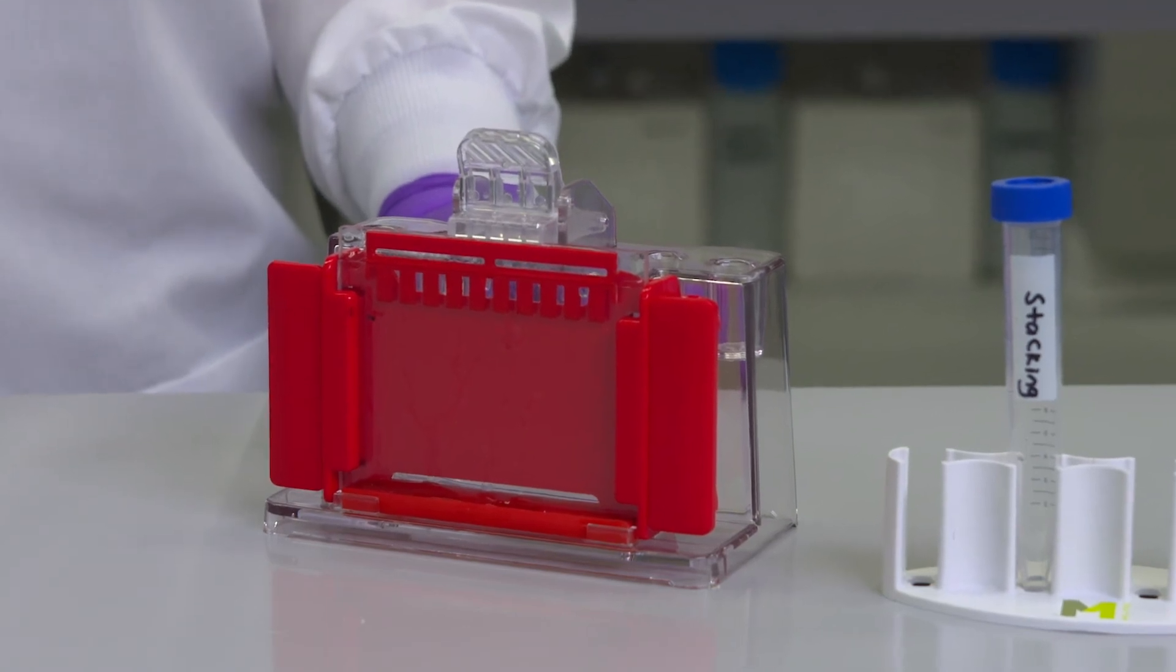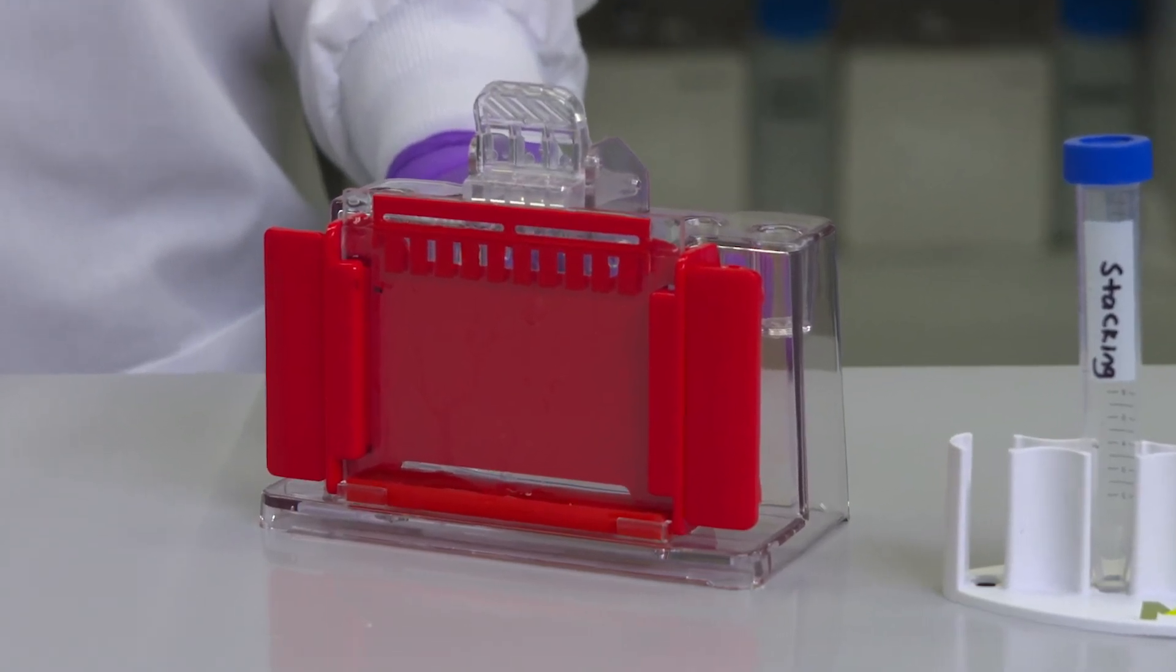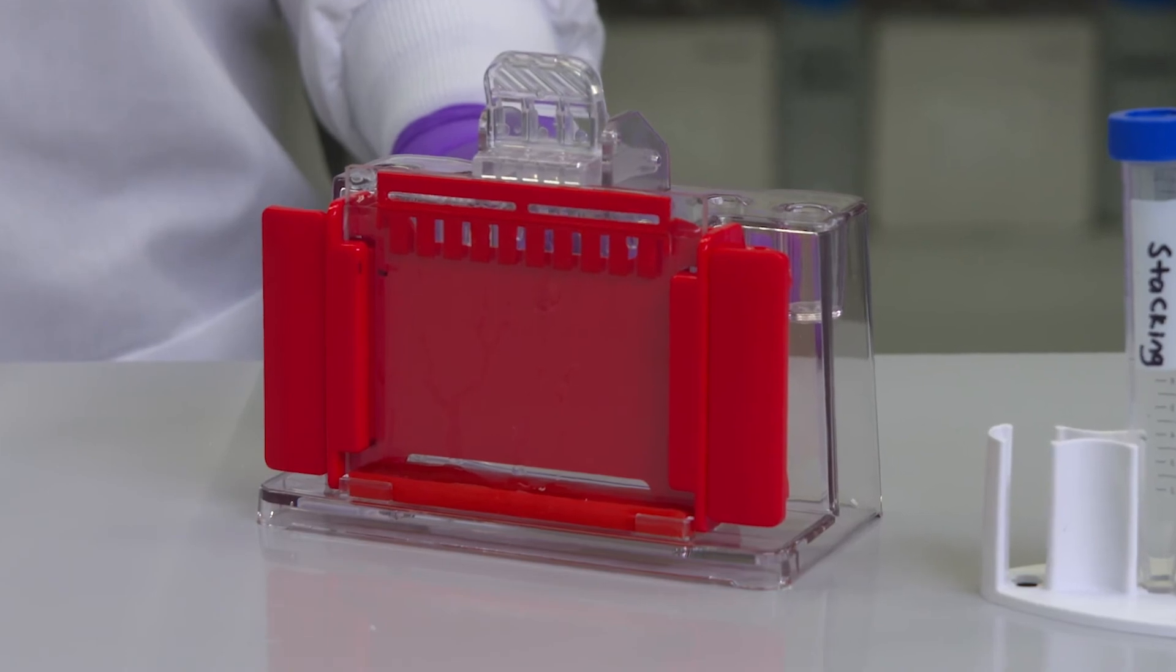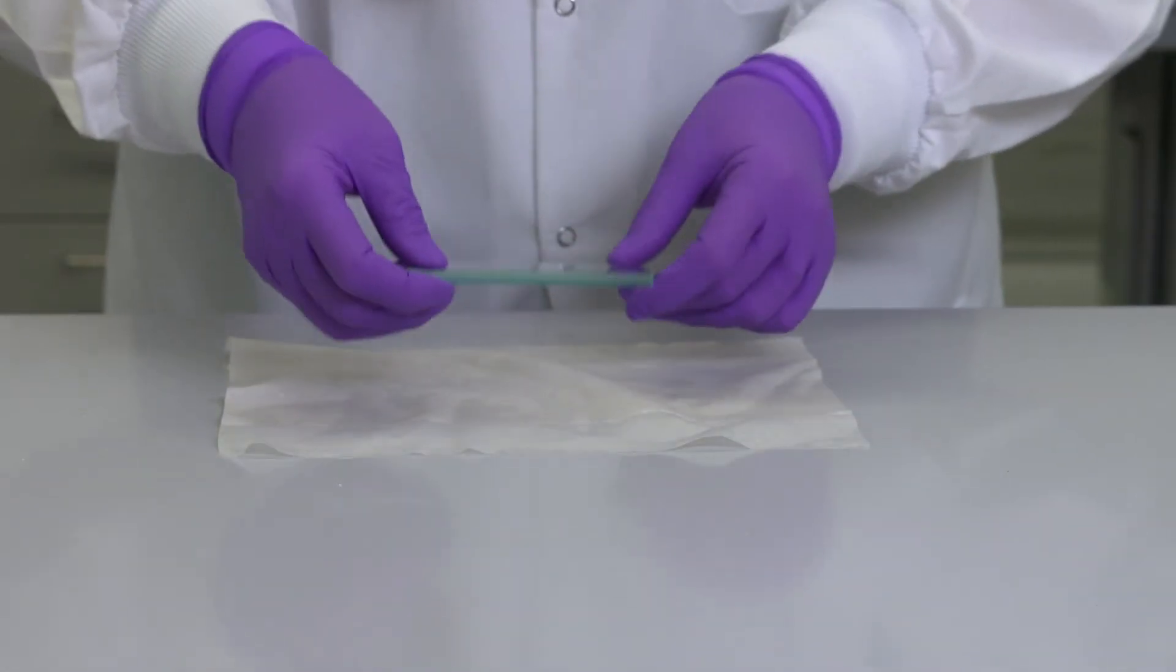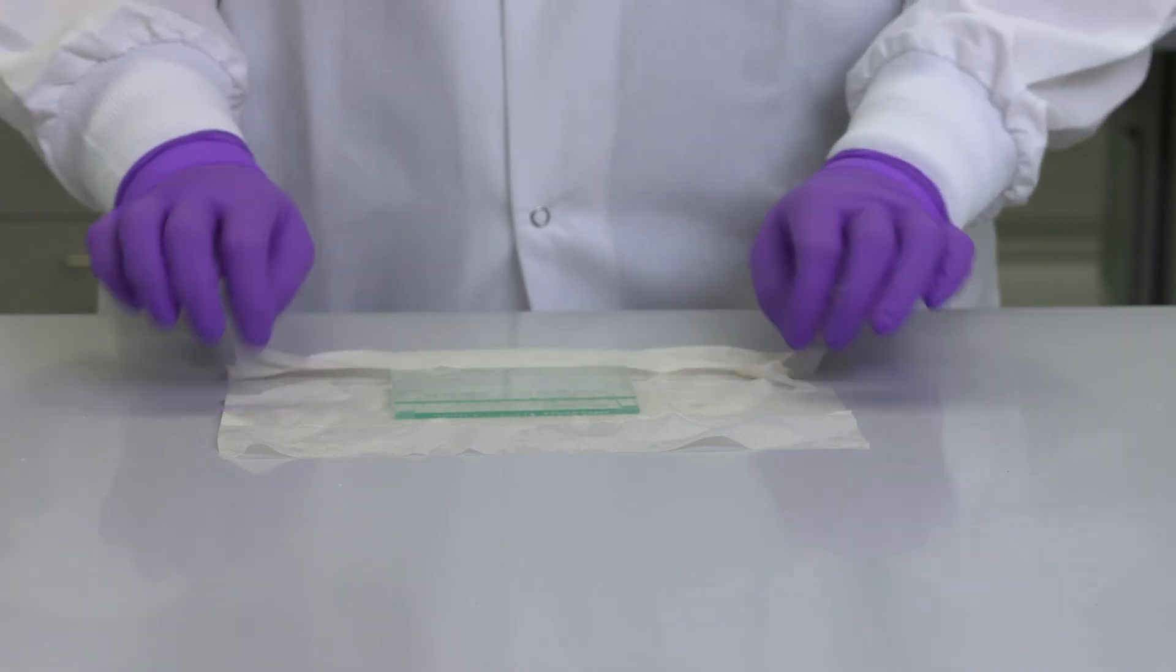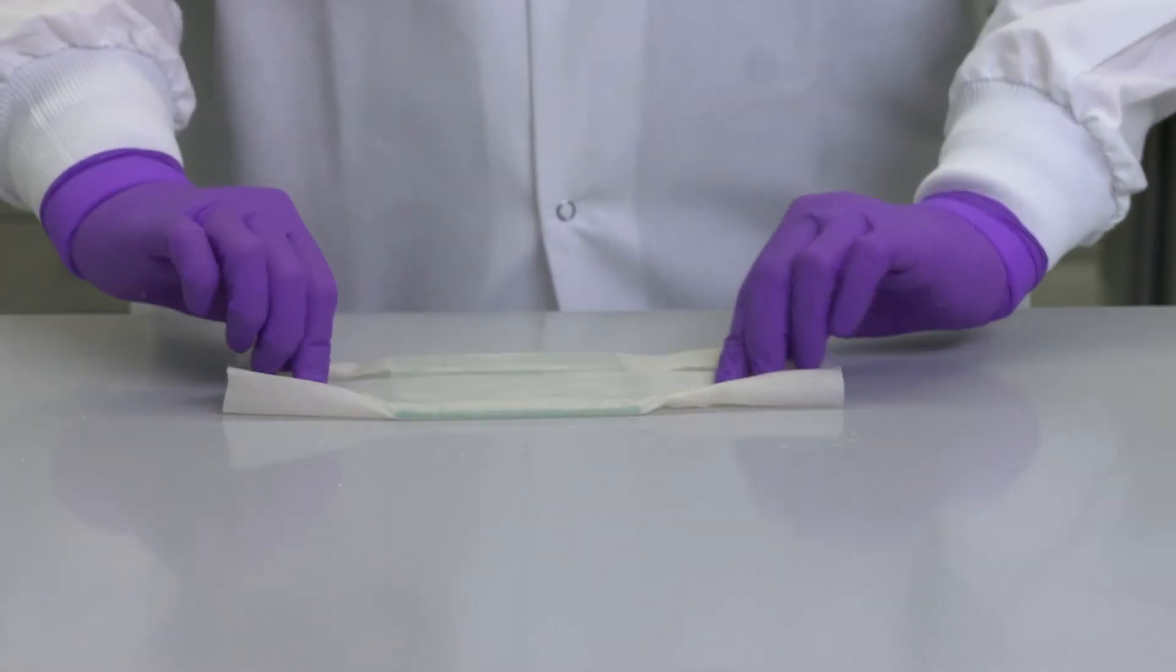Let the gel polymerize in the casting stand for 1 hour before using it or storing it for later use. Gels can be wrapped in wet paper towels and stored in a Ziploc bag at 4 degrees Celsius for up to 4 weeks.